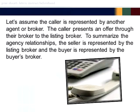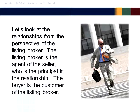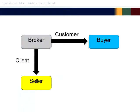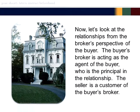Let's assume the caller is represented by another agent or broker. The caller presents an offer through their broker to the listing broker. To summarize the agency relationships: the seller is represented by the listing broker and the buyer is represented by the buyer's broker. From the perspective of the listing broker, the listing broker is the agent of the seller, who is the principal, and the buyer is the customer of the listing broker. From the buyer's broker perspective, the buyer broker is acting as an agent of the buyer, who is the principal, and the seller is a customer of the buyer's broker.